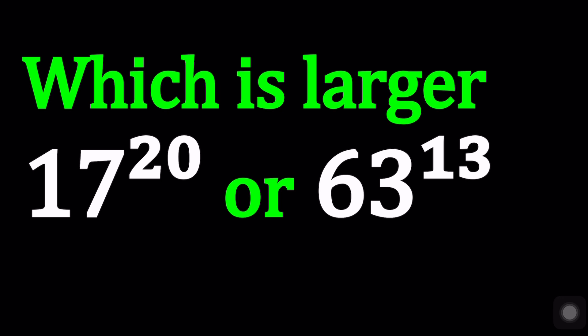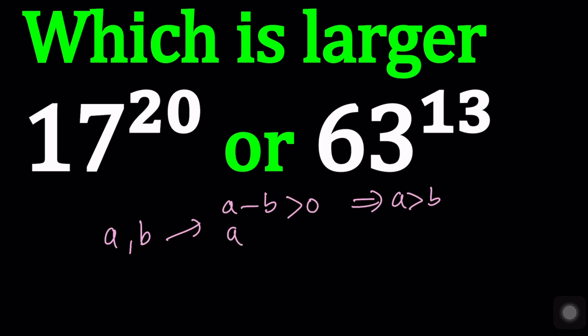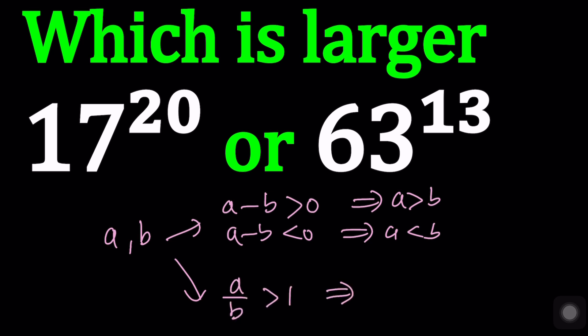One of the methods we use for these kinds of questions is division. Because if you're trying to compare two positive numbers — and both of these numbers are clearly positive — there are mainly two ways to do it. Either you look at a minus b: if a minus b is positive, that implies a is greater than b; if a minus b is negative, that implies a is less than b.